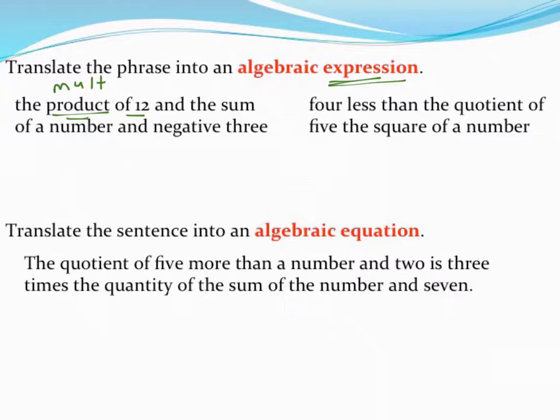It tells me I'm going to be multiplying 12 and something else. And they get a little more complicated because it's not just 12 times a number, but it's the product of 12 and the sum of something else. So I'm going to be multiplying 12 by something that's being added together.